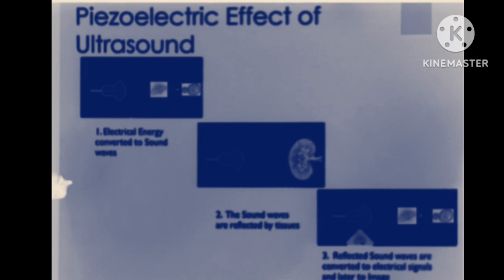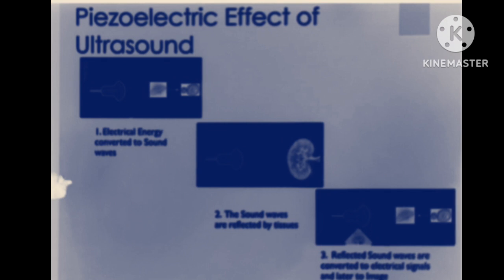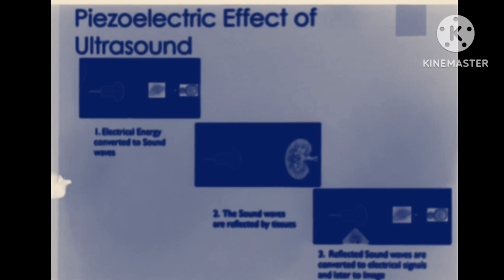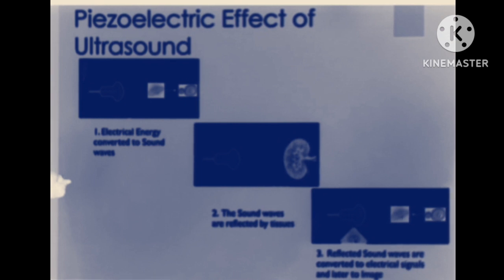How does an ultrasound machine work? Electrical energy is converted to sound waves. Sound waves are reflected by the tissue, and the reflected sound waves are converted to electrical signals to form an image.